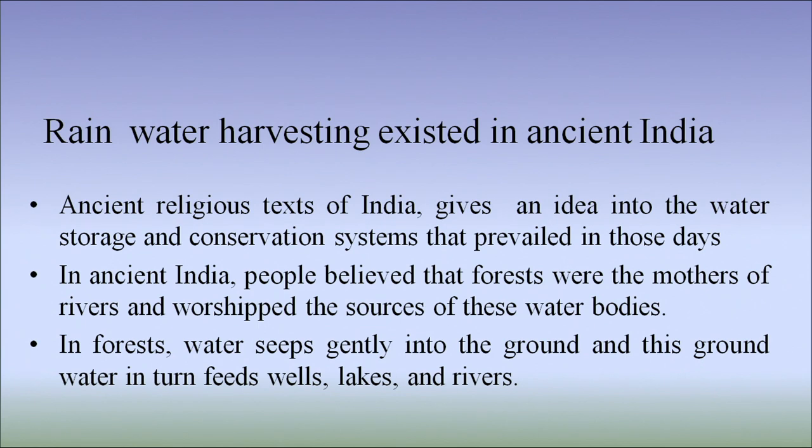Let us see rainwater harvesting in ancient India. Ancient religious texts of India give an idea into the water storage and conservation system that prevailed in those days. In ancient India, people believed that forests were the mothers of rivers and they worshipped the sources of these water bodies. In forests, water seeps gently into the ground and this groundwater in turn feeds wells, lakes and rivers.